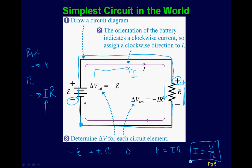We've done this for the simplest circuit, but it's nice to see it works with Kirchhoff's. Thinking of yourself as a positive charge: when you hit the battery, it lifts you to a higher potential, increasing your energy. Then as you go through the resistor from positive to negative end, you're heating things up or lighting a bulb — using up energy. The resistors are voltage drops, so your voltage goes down and you've lost potential energy.